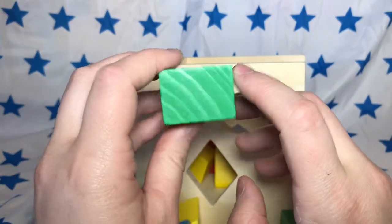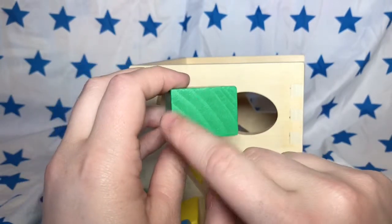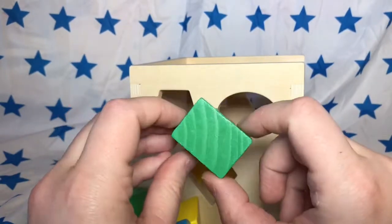This is the green rectangle. It has four sides. One, two, three, four. Unlike the diamond, the sides are straight and not slanted.